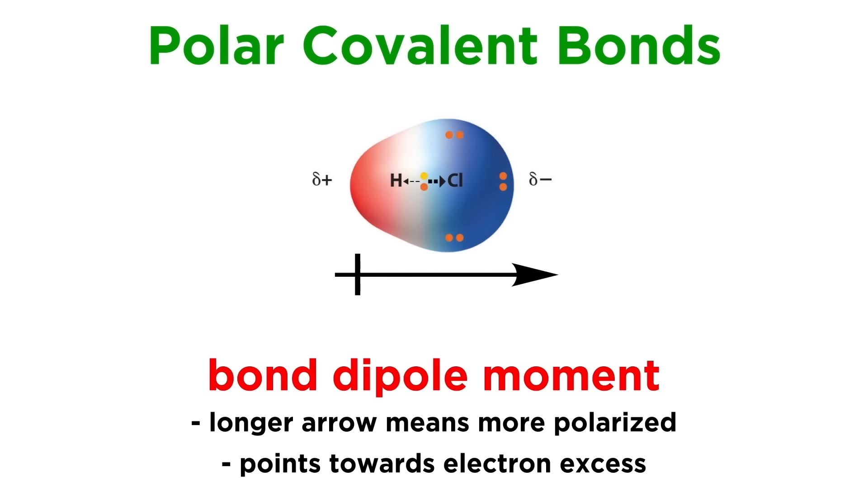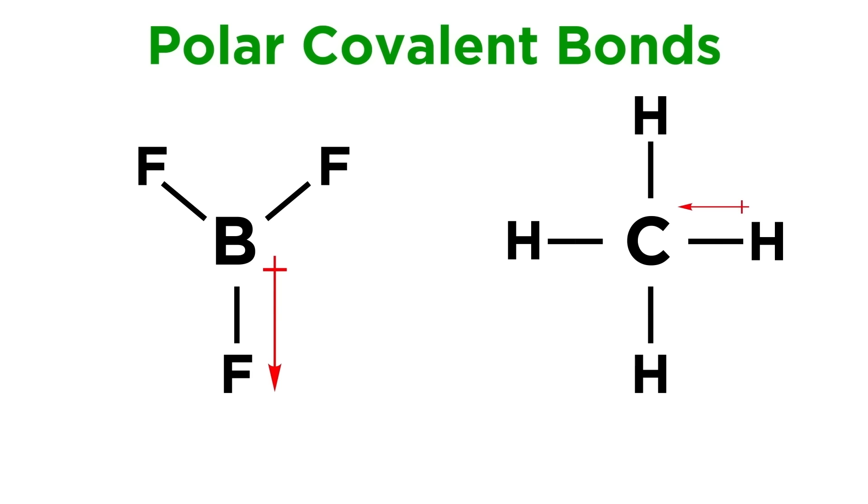These vectors point in the direction of the electron excess. We can see here that a BF bond has a longer dipole vector than a CH bond, because the BF bond is more polar.